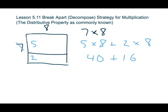So our garden has 56 square feet available. Although we are not using this for computing area, we're just using this break apart decompose strategy for multiplication facts. So this equals seven times eight, and now we can see that equals 56.